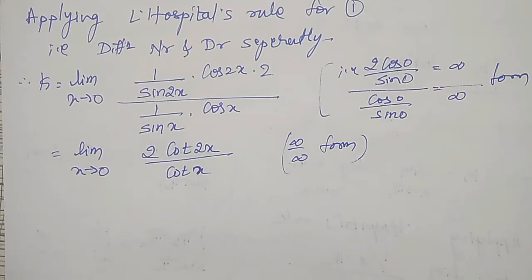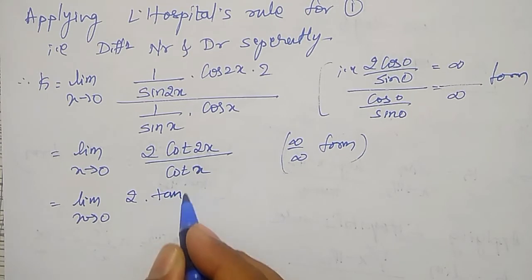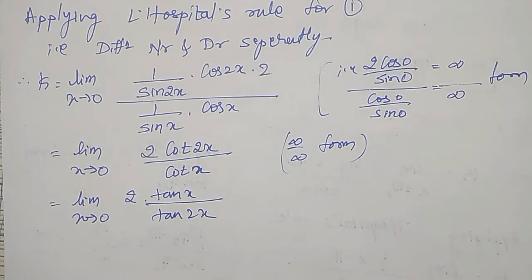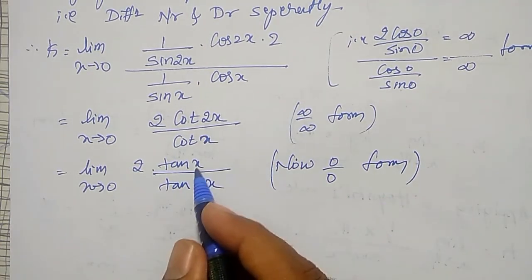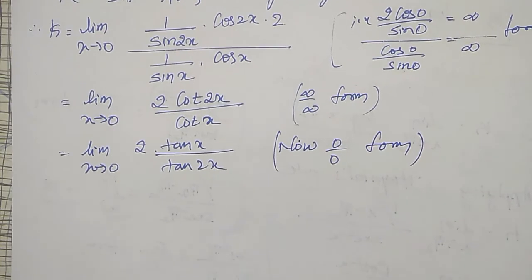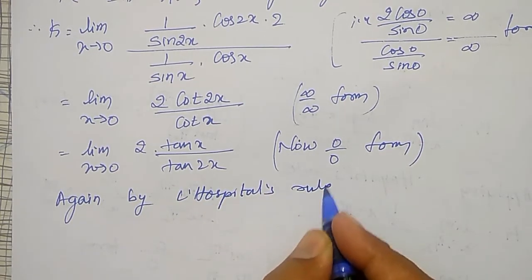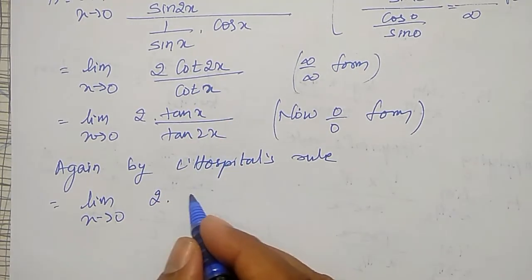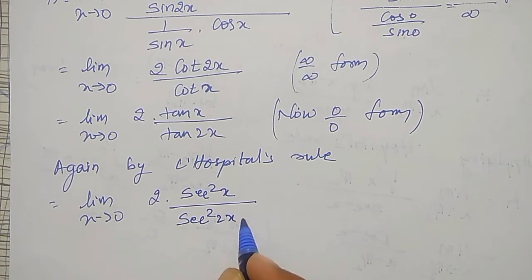For this one I can also apply L'Hôpital's rule, or better, change infinity by infinity to 0 by 0. I can write it as limit as x tends to 0: 2 times tan x divided by tan 2x. Now it is in the 0 by 0 form as tan 0 is 0. Again by L'Hôpital's rule, limit as x tends to 0: differentiation of tan x gives 2 times sec² x divided by differentiation of tan 2x, which gives sec² 2x times 2.